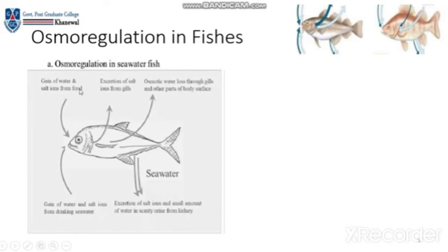The seawater fish excretes salt ions through the gills and other parts of the body surface. This was all about osmoregulation in seawater fish.